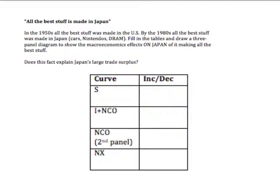I'm not even sure if Honda existed. But by the 1980s, Japan made all the best stuff. Nintendo was Japanese. Hondas were great cars. And Japan and Taiwan made most of the DRAM to power most computers. So what's described here? What curve shift is described here for Japan? We want to think about the macroeconomic effect on Japan.